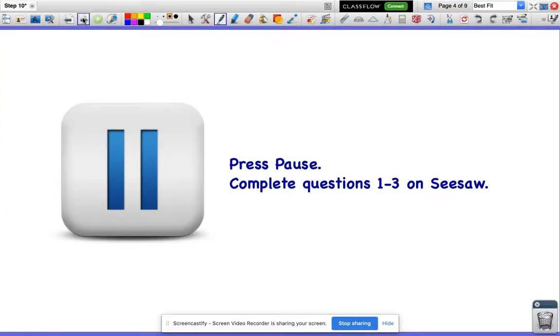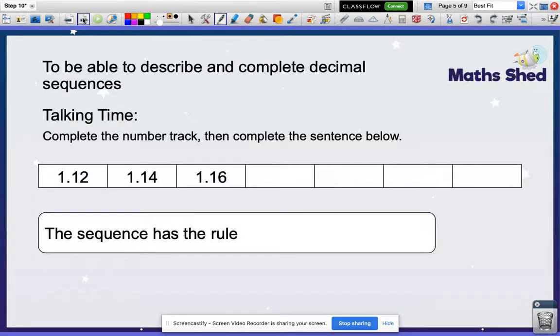Press pause and try and complete questions 1 to 3 on Seesaw. So for these ones, it says complete the number track, then complete the sentence below. The sequence has the rule. So the rule is what is happening each time. How do we get from 1.12 to 1.14, and how do we get from 1.14 to 1.16? Well, the rule is we're adding what each time? We're adding 0. We're not adding any 1s. We're not adding any 10s. We're adding 2 hundredths each time. That's the rule.